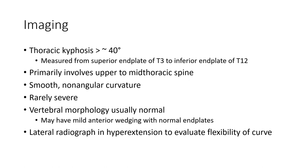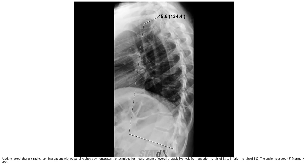Endplates will be normal and flat. A lateral radiograph in hyperextension is performed to evaluate flexibility of the curve. An upright lateral thoracic radiograph in a patient with post-traumatic kyphosis demonstrates the technique for measurement of overall thoracic kyphosis from the superior margin of T3 to the inferior margin of T12.